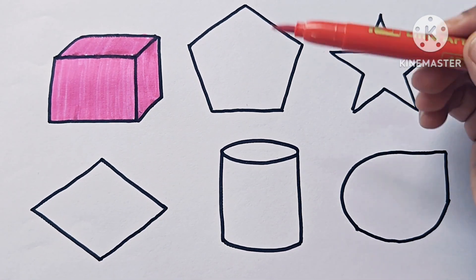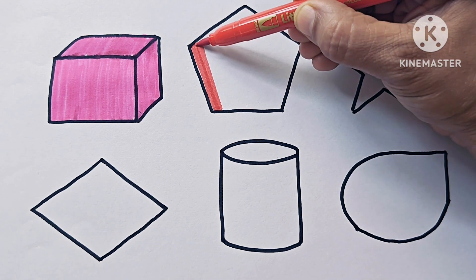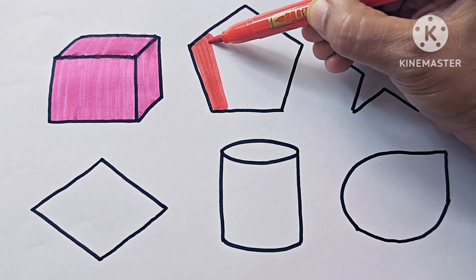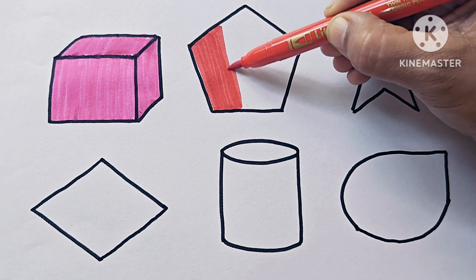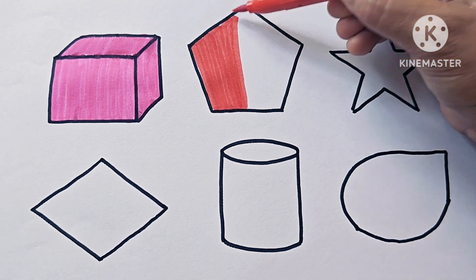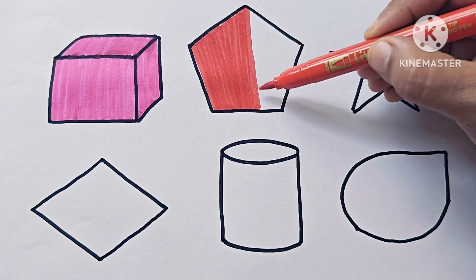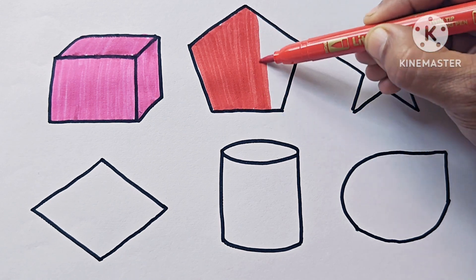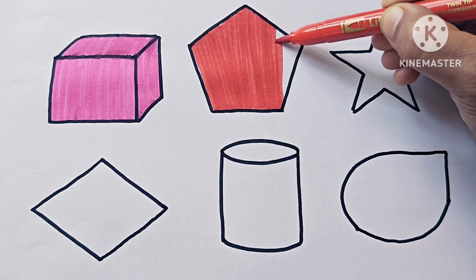The cube is a 3D shape. It has six faces, 12 edges, and eight corners. Red color — this is the pentagon. A pentagon has five sides, five corners, five vertices, and five angles. Penta means five. It is a 2D shape.